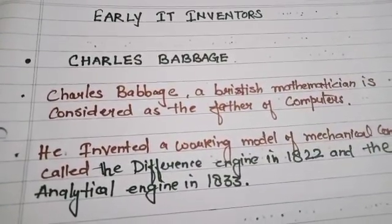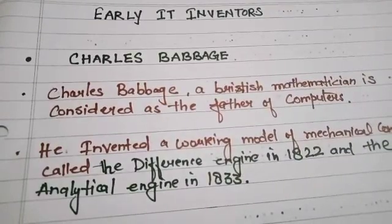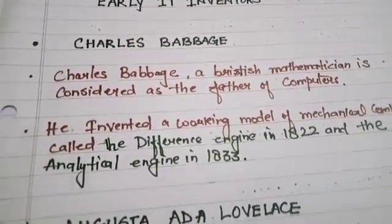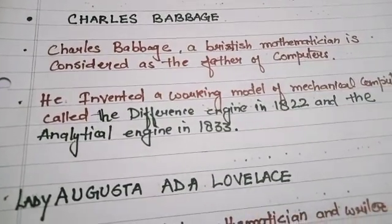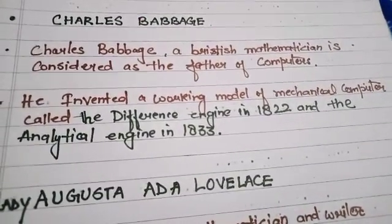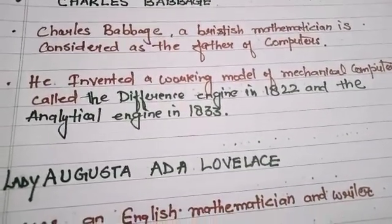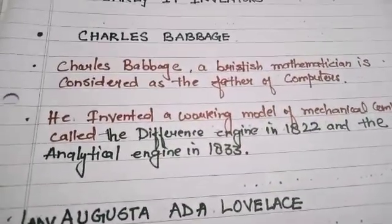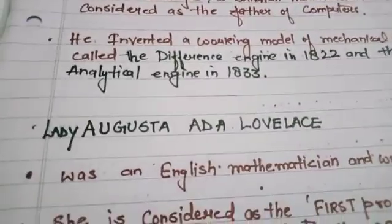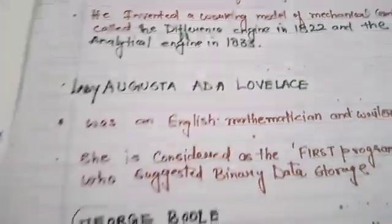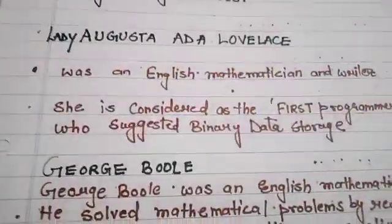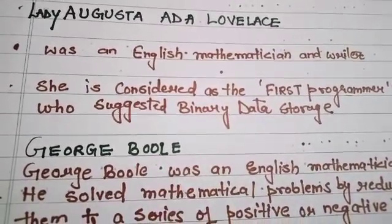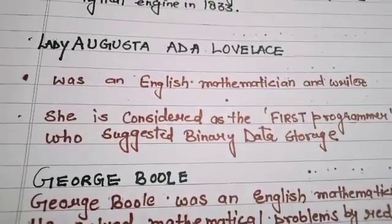Now, the early IT inventors. Charles Babbage, a British mathematician, is considered as the father of the computer. He invented a working model of a mechanical computer called the Difference Engine in 1822 and the Analytical Engine in 1833. Then, Lady Augusta was an English mathematician. She is considered as the first programmer who suggested binary data storage.